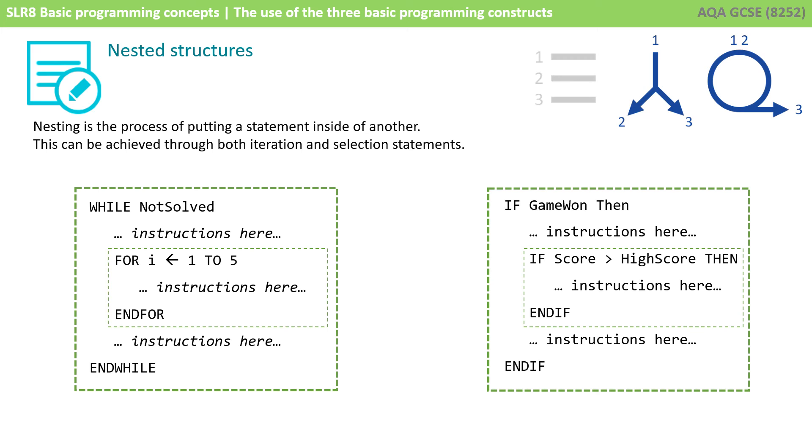If we look at the example on the left here, we can see we have an iterative for loop nested inside an iterative while loop. And this is perfectly fine. So it's saying while not solved, run a number of instructions and then enter a for loop which will run some instructions one to five times. That inner for loop happens one to five times, exits, but then we're still inside the outer while loop.